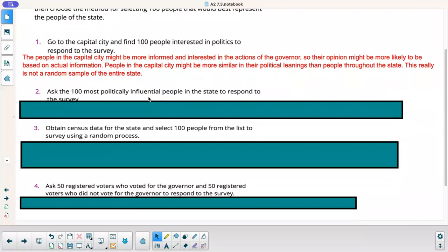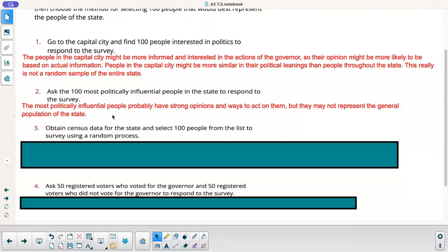Two, ask the 100 most politically influential people in the state to respond to the survey. Well, the most politically influential people probably have strong opinions and ways to act on them, but they may not represent the general population of the state. You're not going to get the same opinion from someone that is politically influential versus your common citizen.